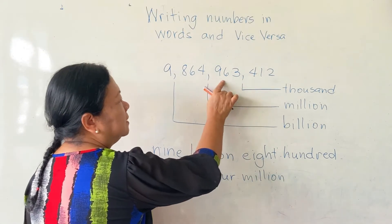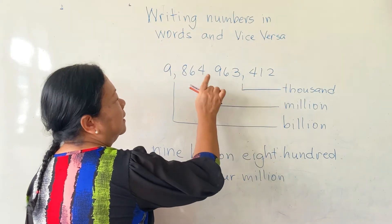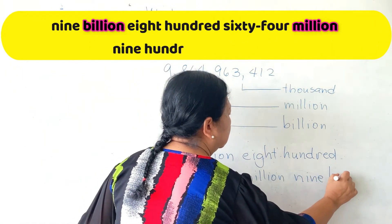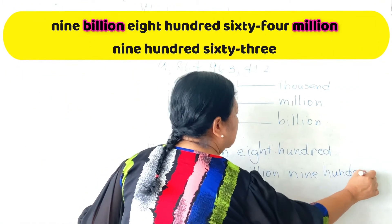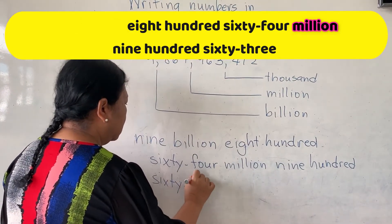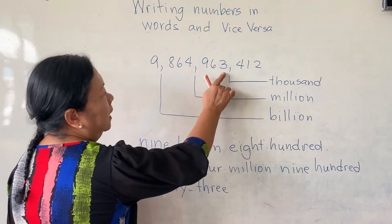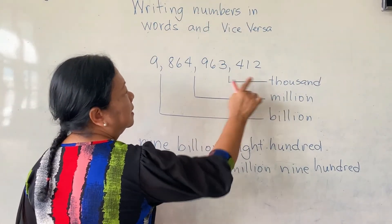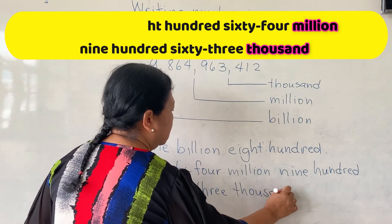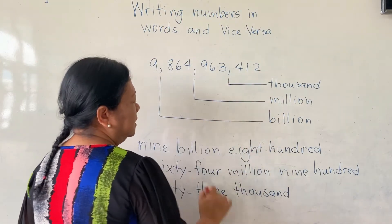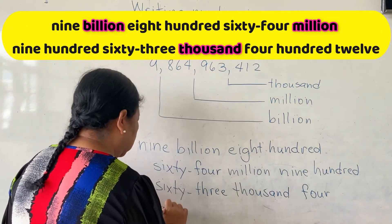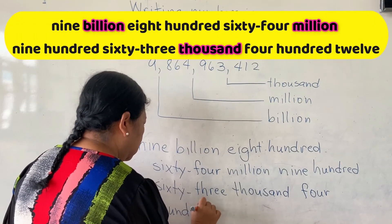And then again, read the three digits: nine hundred sixty three. And you will see again the comma, where you need to say thousand. And then the last three digits, you will read as four hundred twelve.